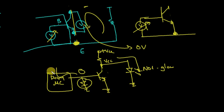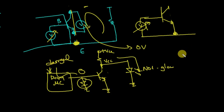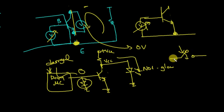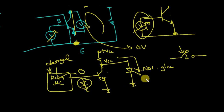If the current drawn is within the controller's limits, it's fine, but if it exceeds those limits, the controller will be damaged. Just as we use our hand to turn a switch on and off, here we're doing it using a voltage source at the base. In practical applications, you will see exactly how useful this is.